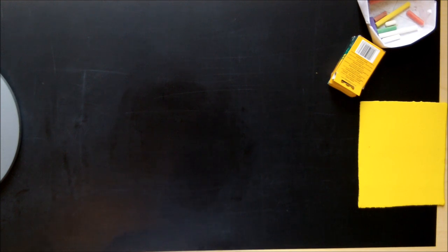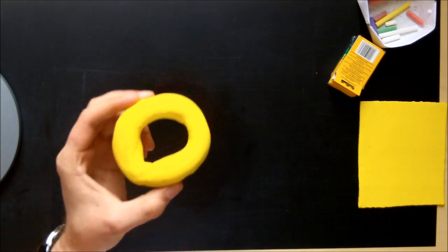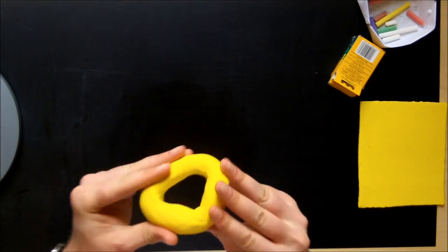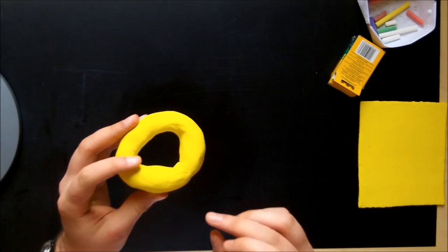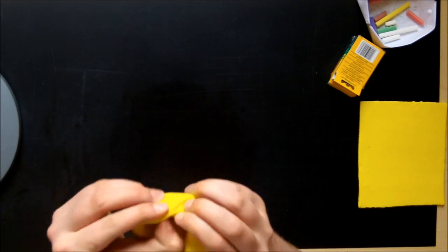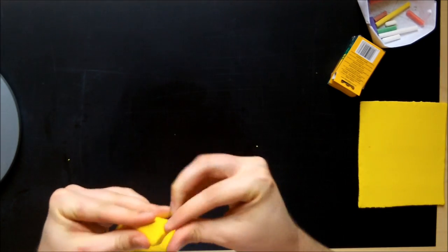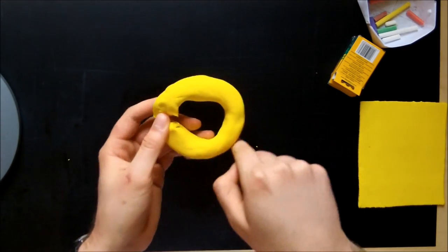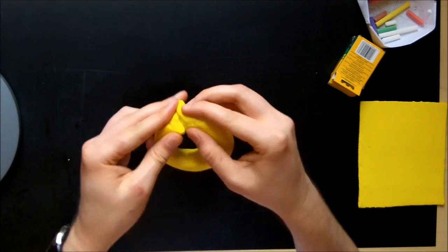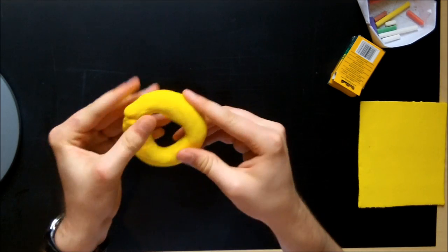So first of all, the torus is of course a doughnut shape like this, maybe a bit more even. You can think of it as a circle that's been sliced, so the cross section is a circle, and you sweep it round in another circle and join them up to make this ring shape.